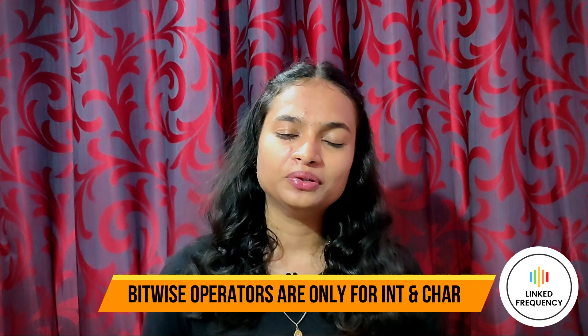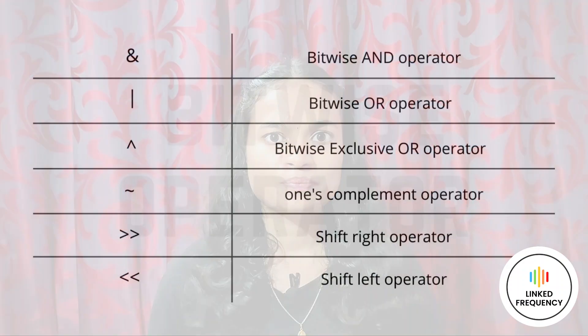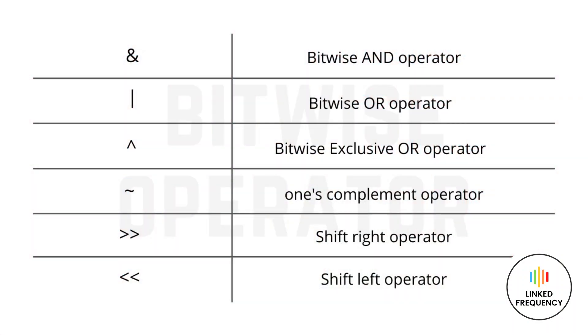Moving ahead to the bitwise operator. Bitwise operators are used to manipulate data at the bit level. The data is first converted to bit level and then calculations are performed. Bit-level operators can operate on integer and character only — not supported for float and double. The bitwise operators are: bitwise AND, bitwise OR, bitwise exclusive OR (XOR), one's complement, right shift, and left shift.